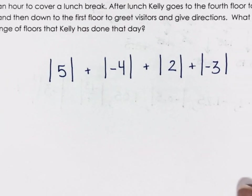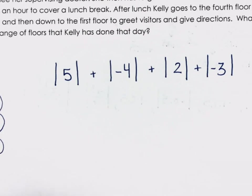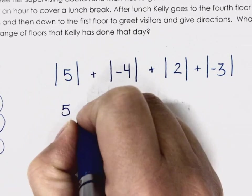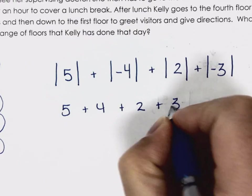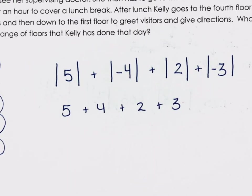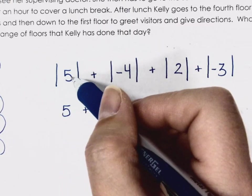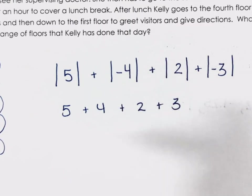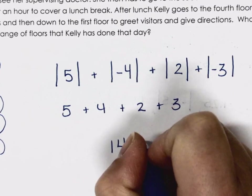We don't care about the direction — we just care about how much she moved that day. We evaluate all the absolute values: five plus four plus two plus three, because the absolute of five is five and the absolute of negative four is positive four. So Kelly traveled 14 floors in the day.